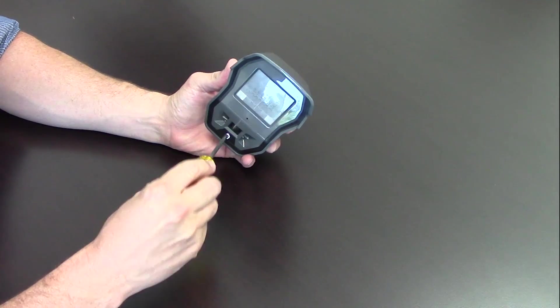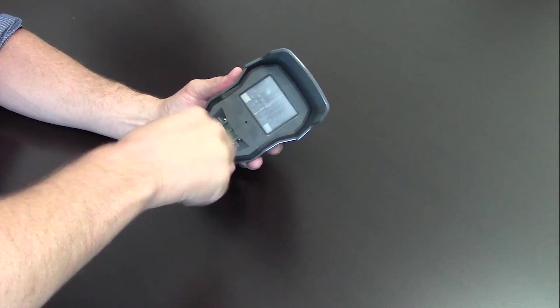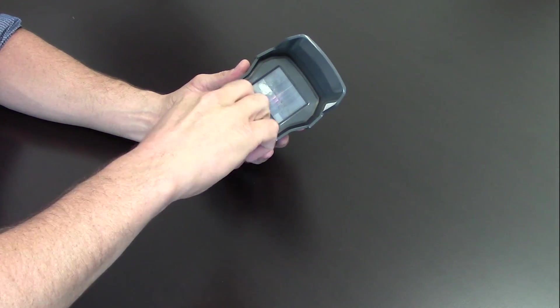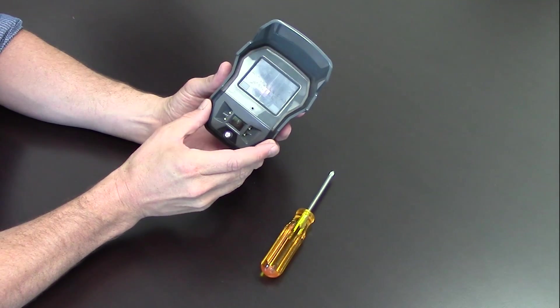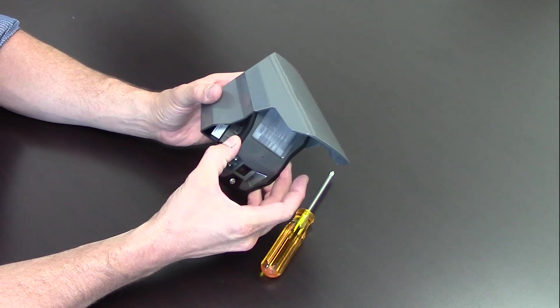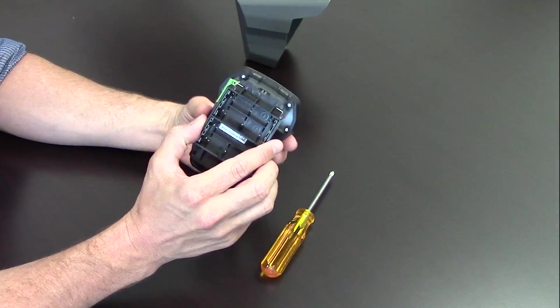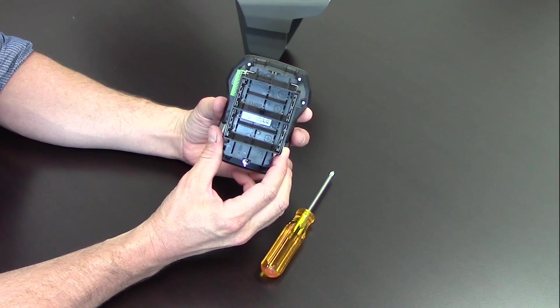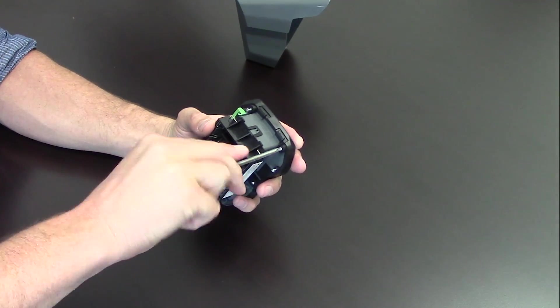To replace the Fresnel lens, first loosen the screw on the front of the OMV. Remove the detector from the housing. Turn it around to view the battery compartment side of the device. Loosen the four screws as indicated.